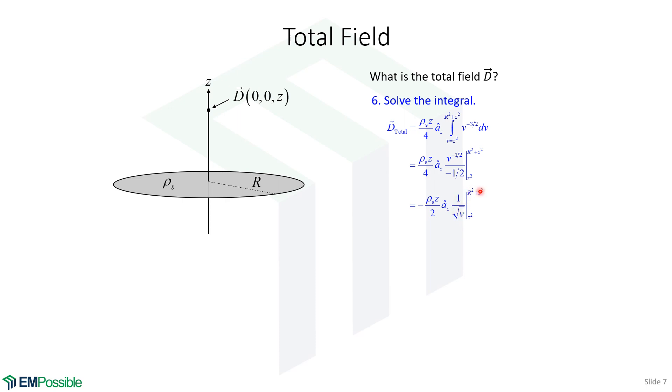That's a piece of cake. And I end up here. So the d total is simply rho s over two, and a bunch of stuff in parentheses in the z direction. And the bunch of stuff in parentheses, it's what's accounting for the finite size of this surface charge.